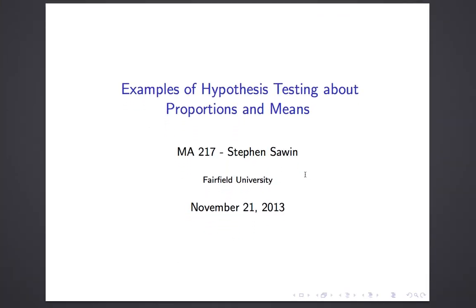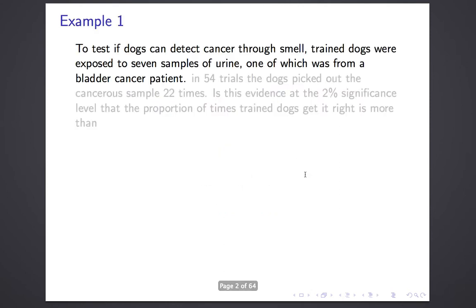I want to show you three examples of hypothesis testing of various sorts to give you a feel of the kind of problems that you should now be able to do and to explore some of the wrinkles that come up. Here's my first example. We're interested in testing if dogs — this I have to admit is the grossest example we'll ever do, but I hope you enjoy it — to test if dogs can detect cancer through smell.